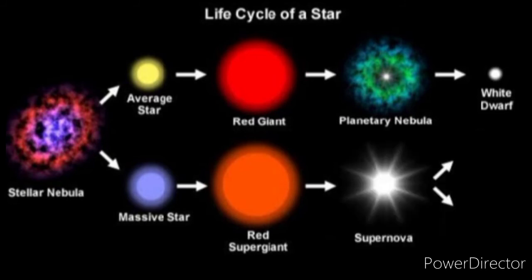When the dust clears, the only thing left from the supernova is a very dense star called a neutron star. These can also be known as pulsars. If the red supergiant that exploded was even larger than an average-sized red supergiant, it can form something even more extreme.